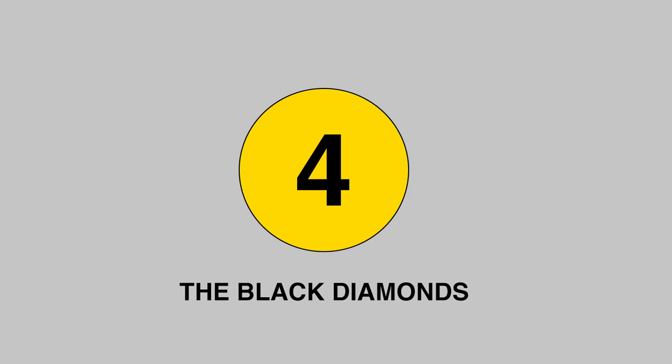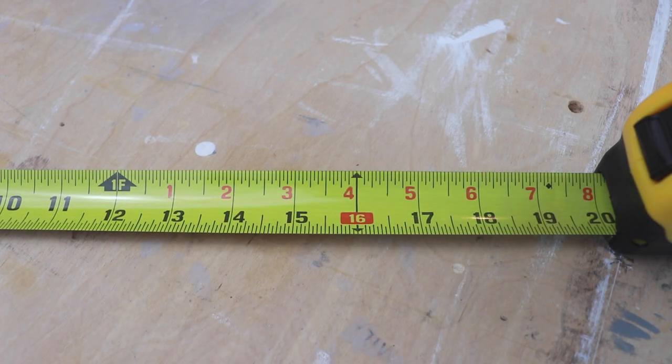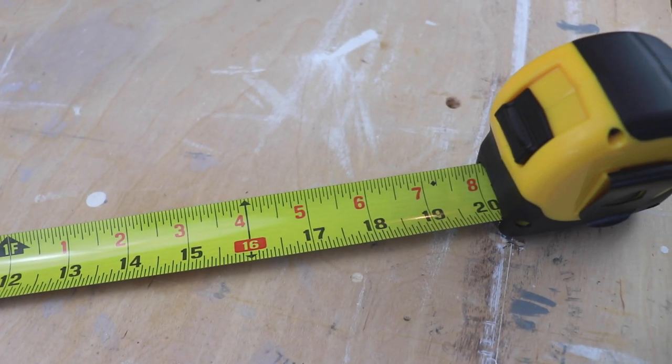Number 4: The black diamonds. The black diamonds, which appear every 19 and 3/16ths on a tape measure, are for spacing I-beams.